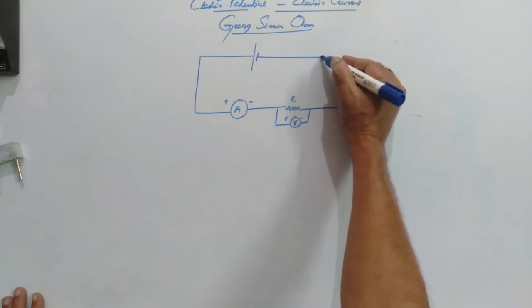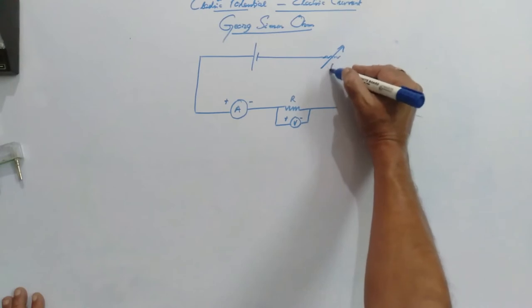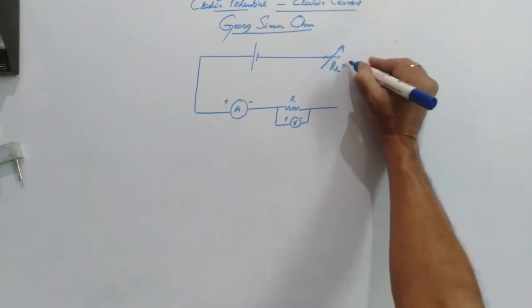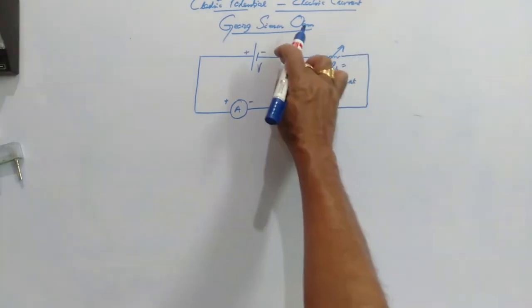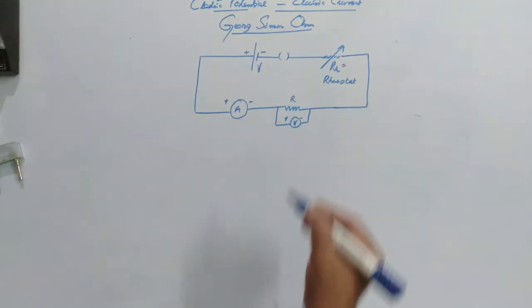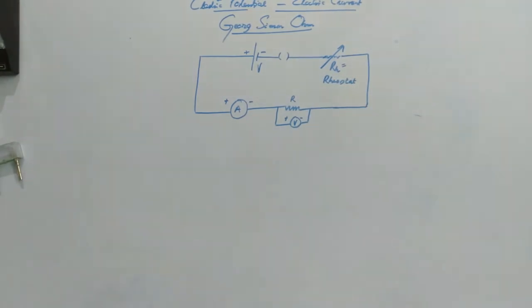Now, to get more values, we have to make use of a variable resistance which is known as rheostat. And we will have one switch, of course, so that battery is not consumed when we are not taking the readings.